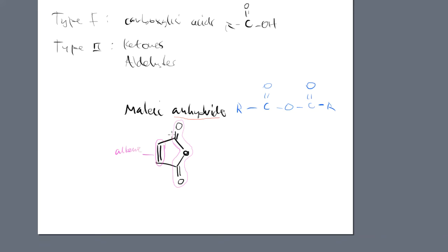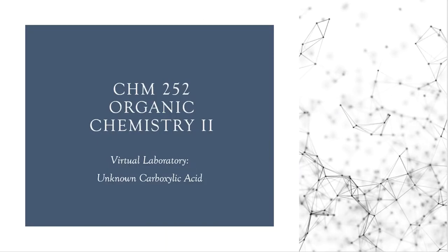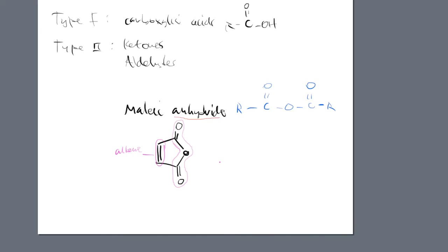Maleic anhydride also has an alkene characteristic — a double bond in the ring. This is the molecule we're starting with in this virtual lab. We're going to do a reaction using this top-one carbonyl compound, and according to the name of the lab, we're going to be making a carboxylic acid. So I'll take the anhydride structure, apply some reagent, and end up with some form of a carboxylic acid — and then figure out which kind.